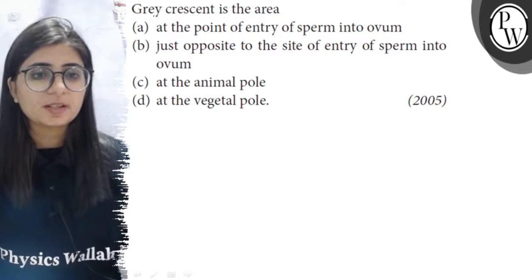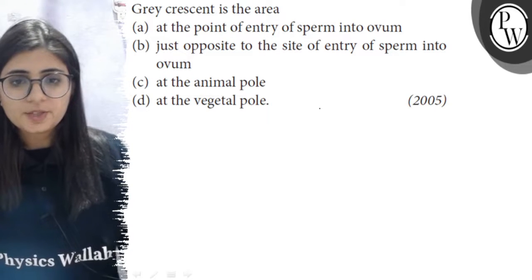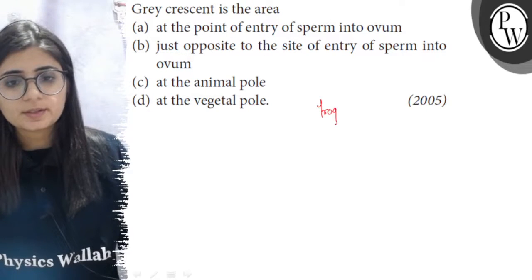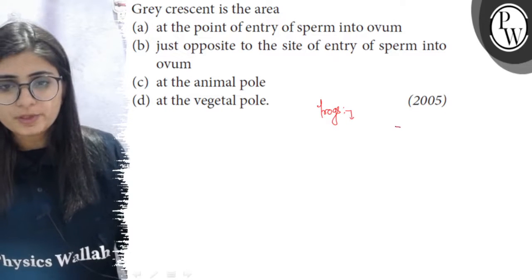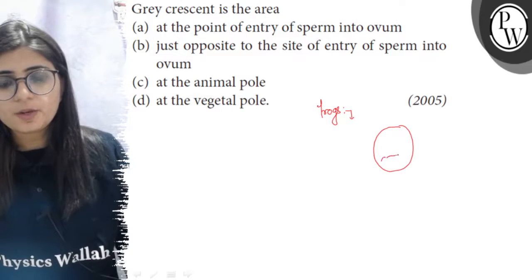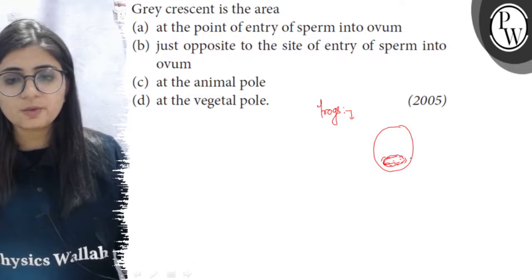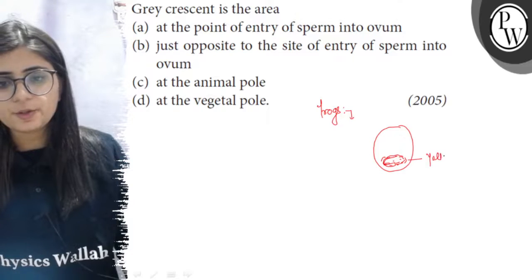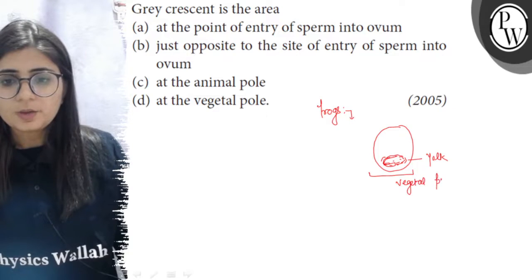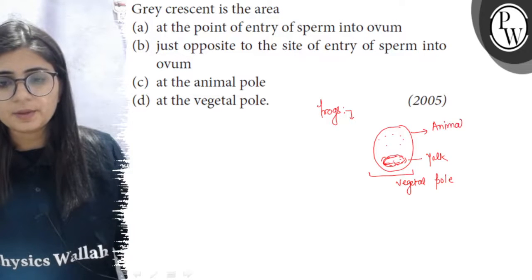The question is about the gray crescent area. In case of many frogs, there are two poles. One pole is where the yolk is deposited — the stored or reserved food. This pole where yolk is deposited is called the vegetal pole. The opposite pole, where there is cytoplasm and no yolk, is called the animal pole.